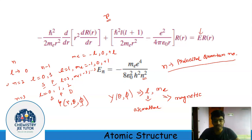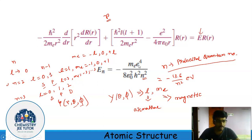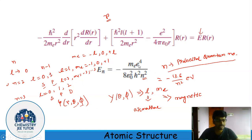One point I forgot to mention: the energy expression, if I put in all the constant values, comes out as −13.6/n² electron volts. If we recall Bohr's atomic theory, this energy expression is the same as what we got from the Bohr model. But Bohr's theory had different flaws — like, it cannot explain the Heisenberg uncertainty principle. In Bohr's theory, the path where the electron orbits the nucleus is fixed, but the Heisenberg uncertainty principle says it is not possible to exactly determine the position and velocity of a subatomic particle simultaneously. However, somehow the energy expression for the electron is the same as what we get from the Schrödinger wave equation.